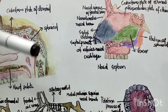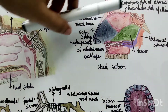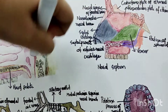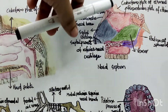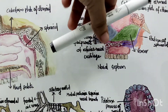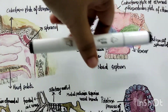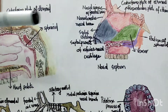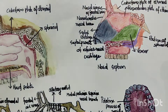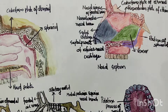The nasal septum has four borders and two surfaces. The four borders are the anterior border, the posterior border, the superior border, and the inferior border. The two surfaces are the right and the left surfaces.